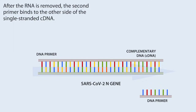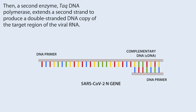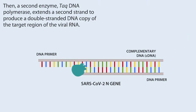After the RNA is removed, the second primer binds to the other side of the single-stranded cDNA. Then a second enzyme, TAC DNA polymerase, extends a second strand to produce the double-stranded DNA copy of the target region of the viral RNA.